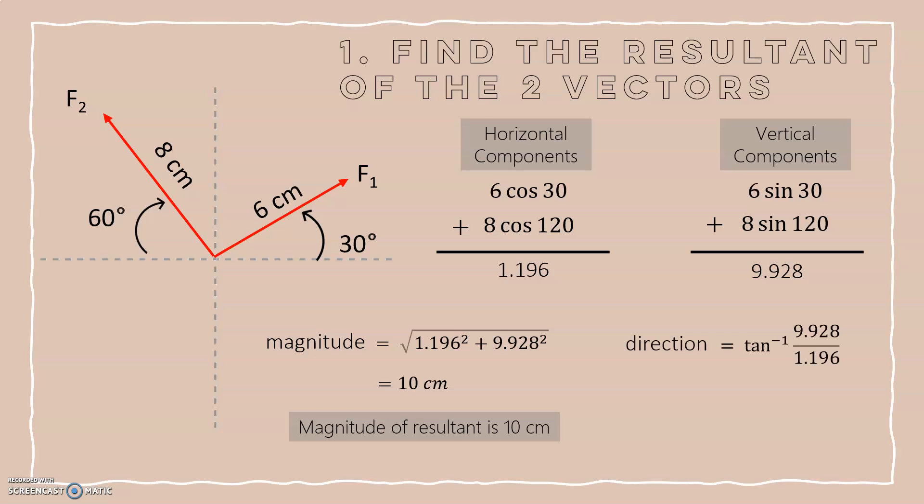On the direction, we are going to be doing tan inverse of sine over cosine. So tan inverse of 9.928 over 1.196.